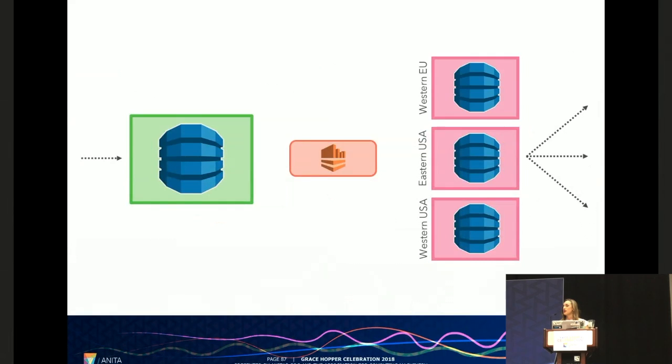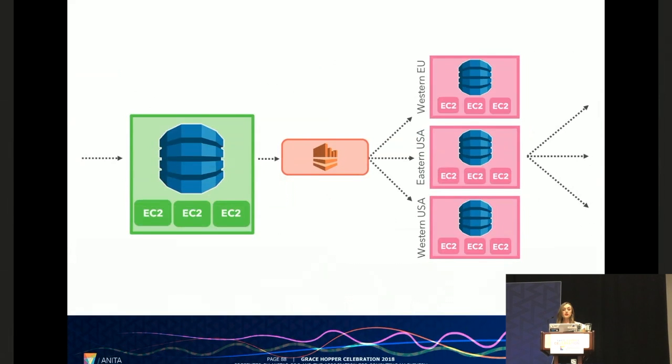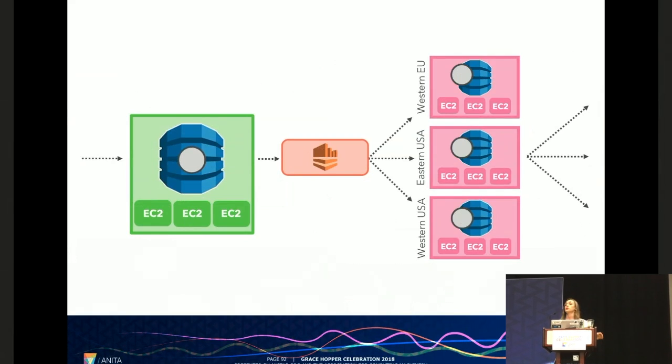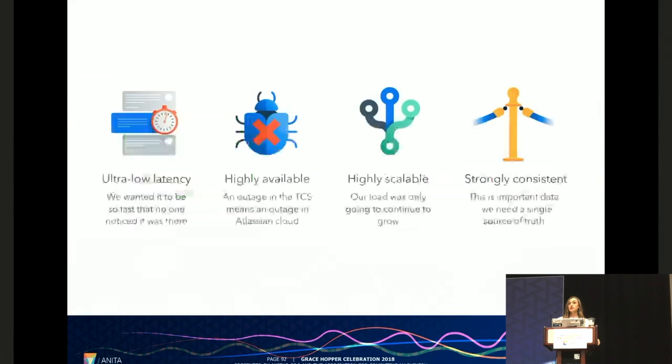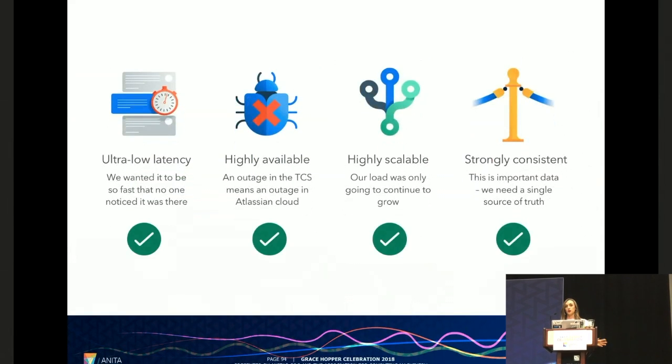So we got ourselves a Kinesis stream. But we now needed something that would write to the Kinesis stream only upon successful persistence, and likewise read from the stream and write it to the TCS tables. Which meant that we needed some compute. So at this point in time, we got ourselves a couple of clusters of EC2 nodes, and they would scale depending on the load that we received. With this in place, we were able to have the catalog service receive a request, write it to its table, and then upon successful persistence, put that information onto the stream. Our TCS stacks from all over the world would be listening to that stream, and they would then be able to pick up that information, and persist them to their own tables. Now with all of this in place, we were able to satisfy all of our requirements.